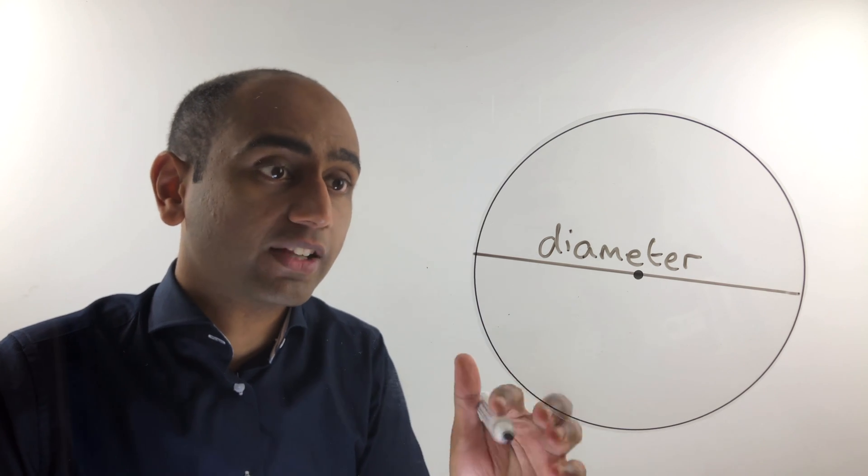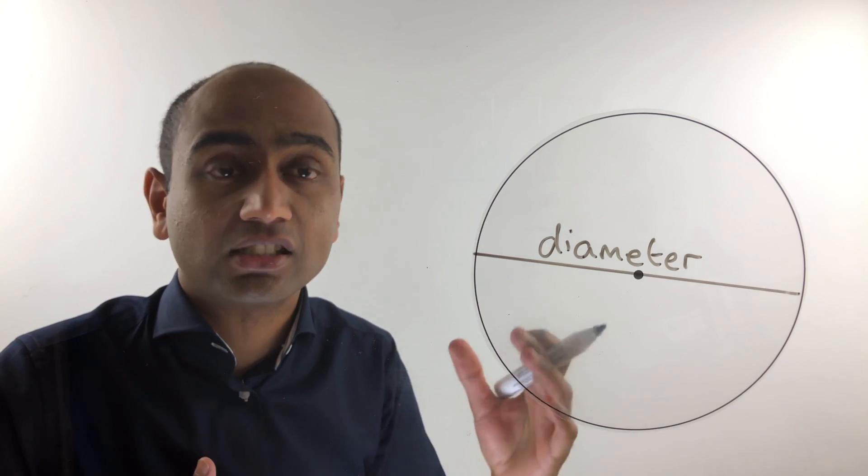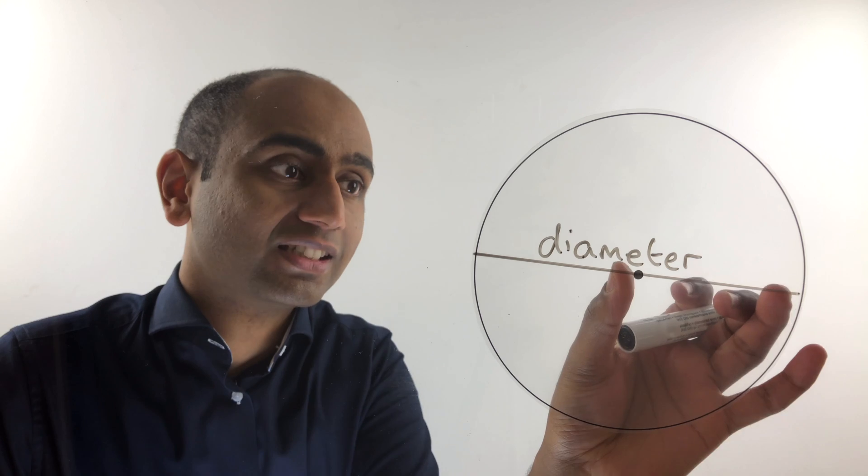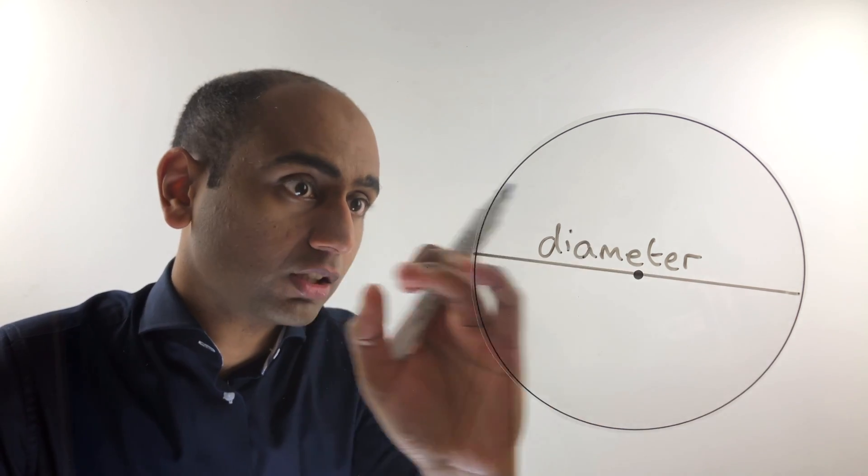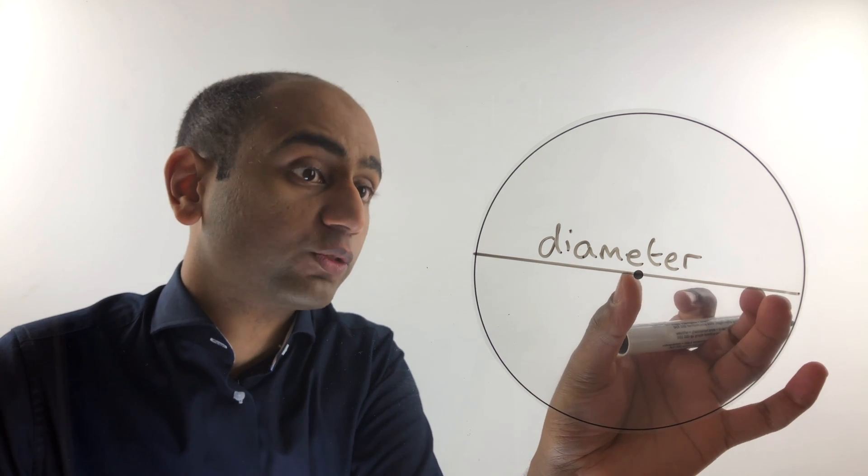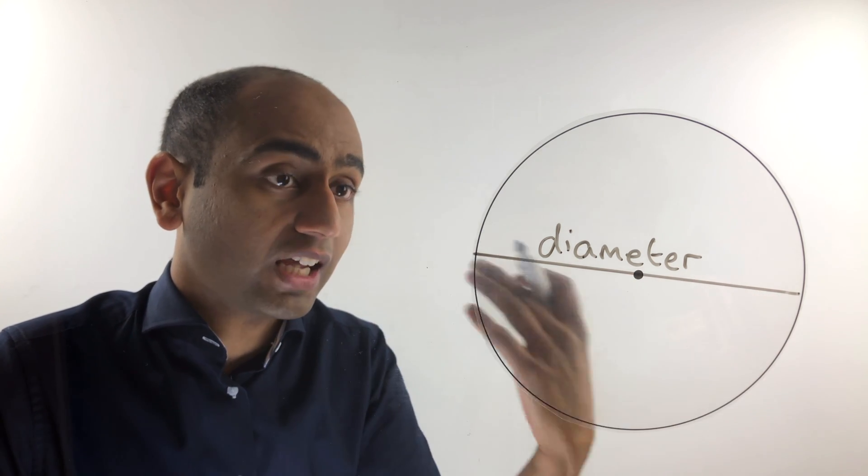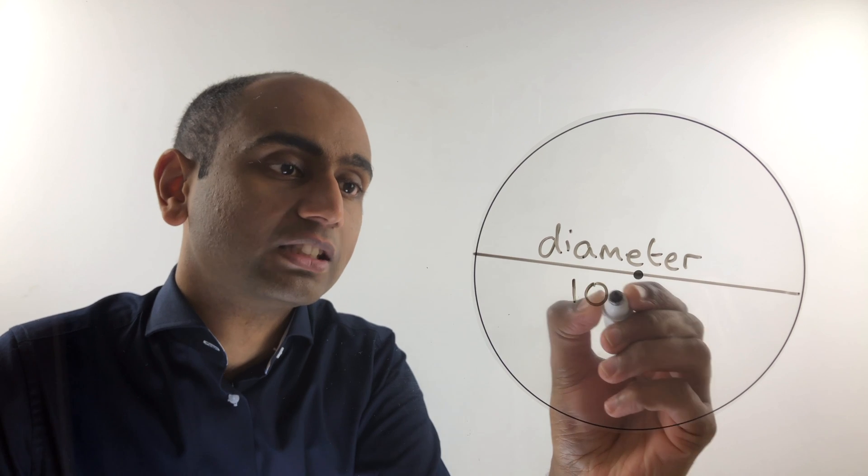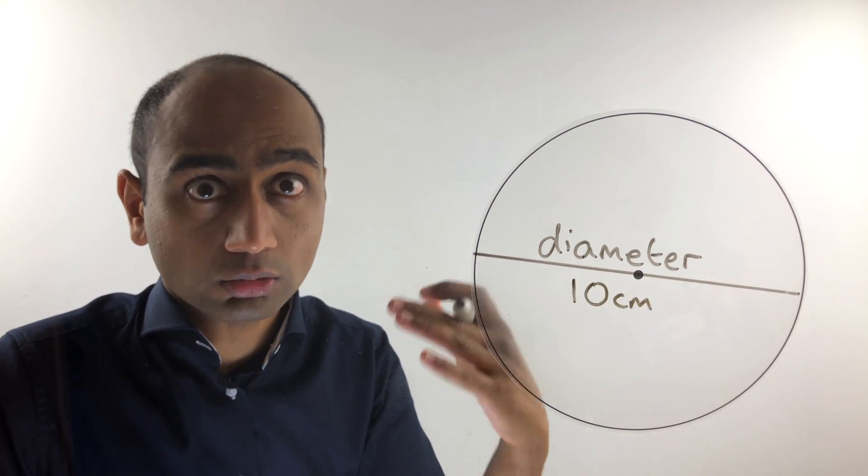Hopefully you can see that the diameter is twice the radius, because it consists of a radius and another radius put end to end. So before, if we said the radius was five centimetres, the diameter would be ten centimetres—it is double the radius.